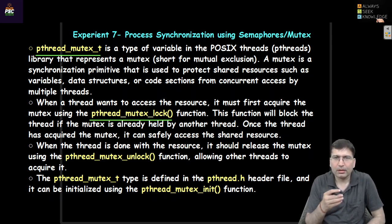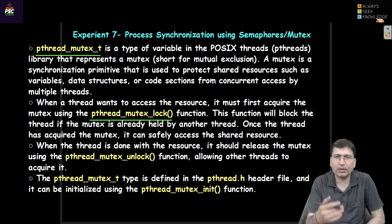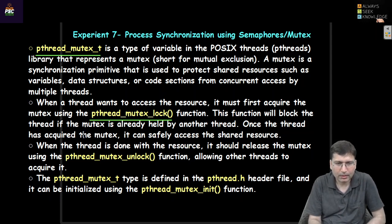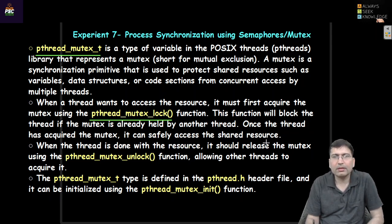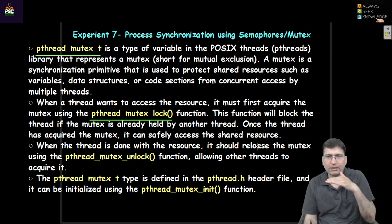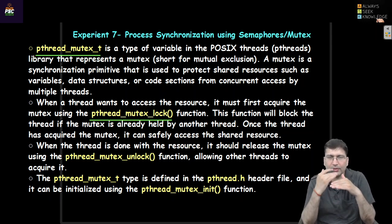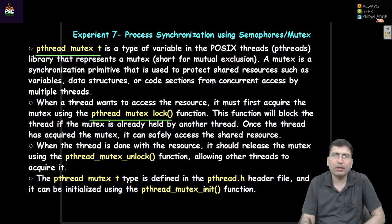There are chances that a process or thread is trying to acquire a lock on a mutex and that mutex is already locked by some other thread. In this case, the thread which is trying to lock the mutex will be blocked. Once the thread has acquired the mutex, it can safely access the shared resource. Just before accessing the shared resource, we first ask the thread to acquire the lock. After the shared resource has been manipulated, the lock can be released.